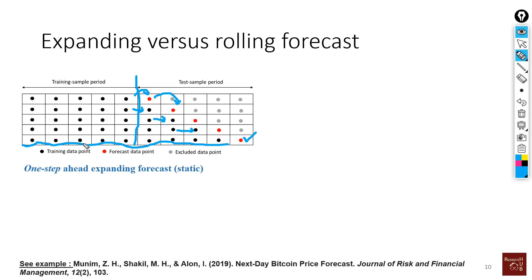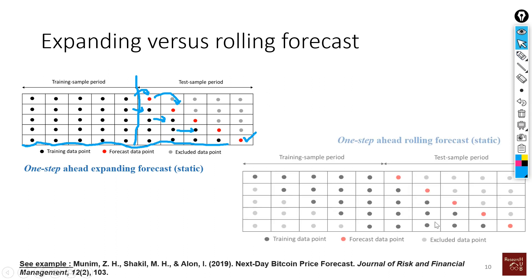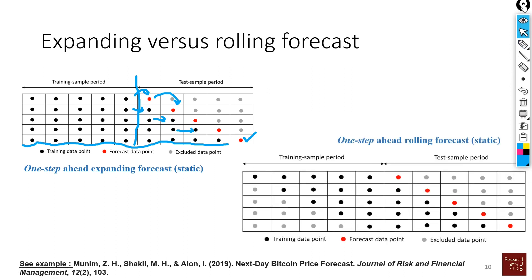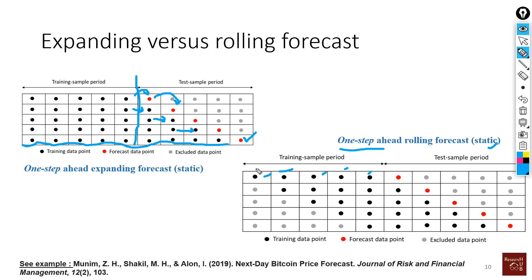On the other hand, here we have an example of rolling forecast — again a one-step-ahead static approach. As you can see, we are using five data points — one, two, three, four, and five — as our training sample, and we are forecasting the sixth one.